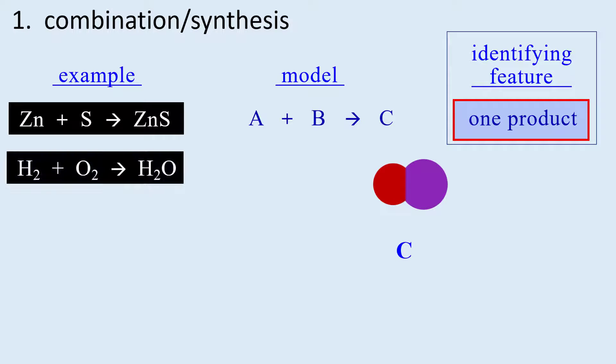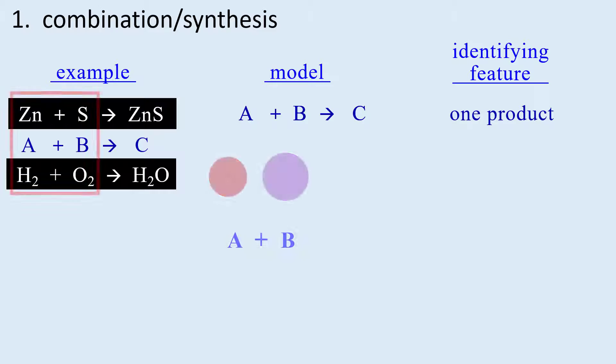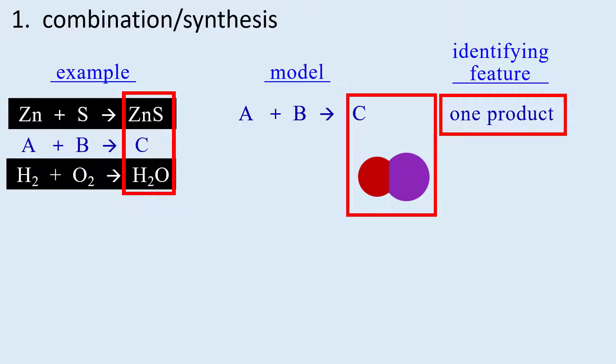Another example is hydrogen and oxygen combining to make water. Notice it is not balanced and for the sake of brevity we will not balance any equations in this video. We can see that these reactions have only one product and that identifies them as combination reactions, so two substances react to form one product.